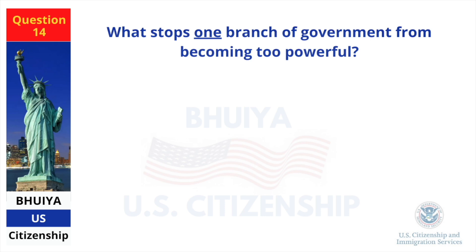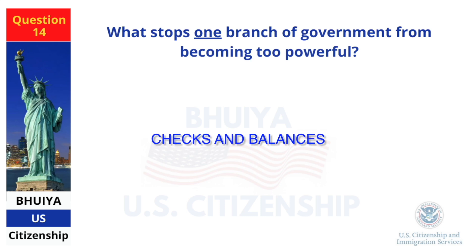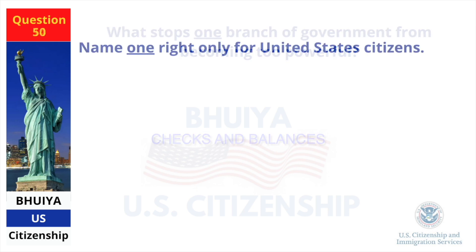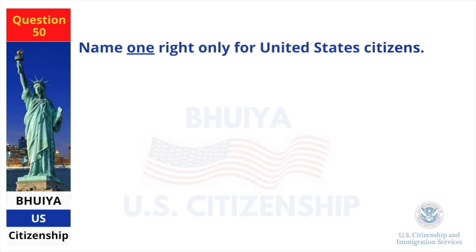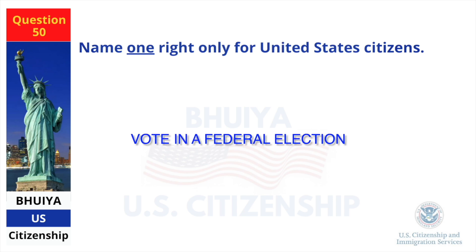What stops one branch of government from becoming too powerful? Checks and balances. Name one right only for United States citizens. Vote in a federal election.